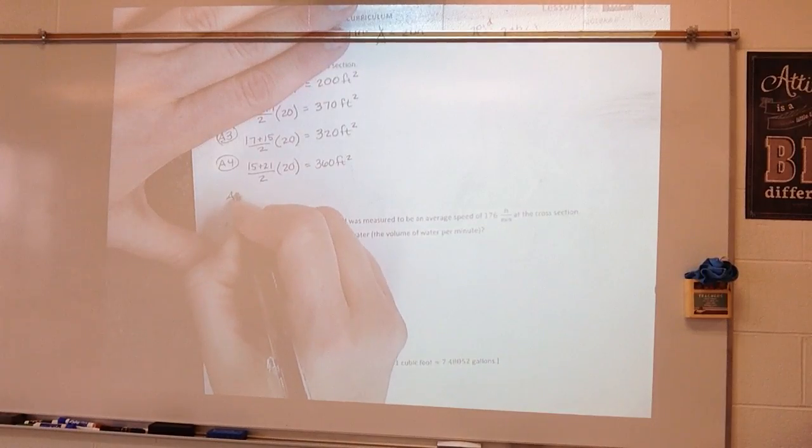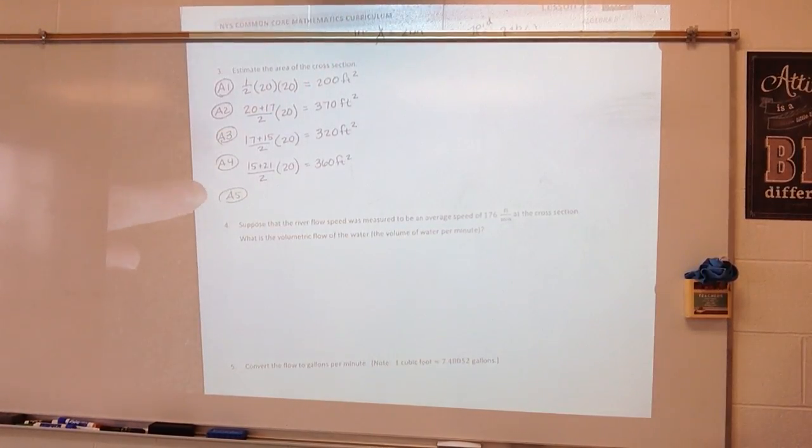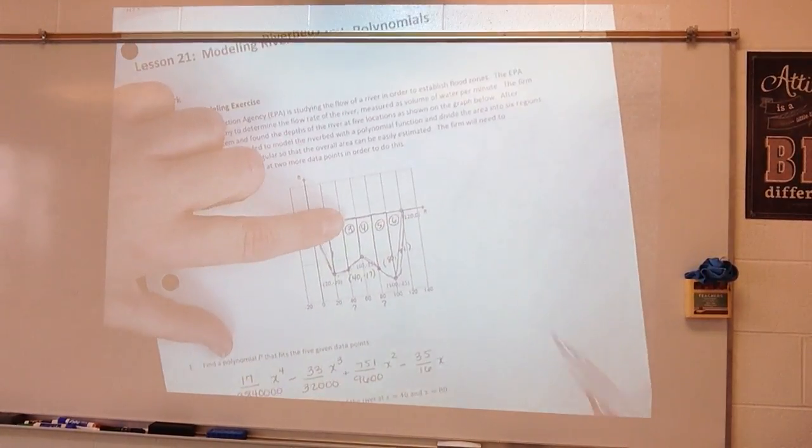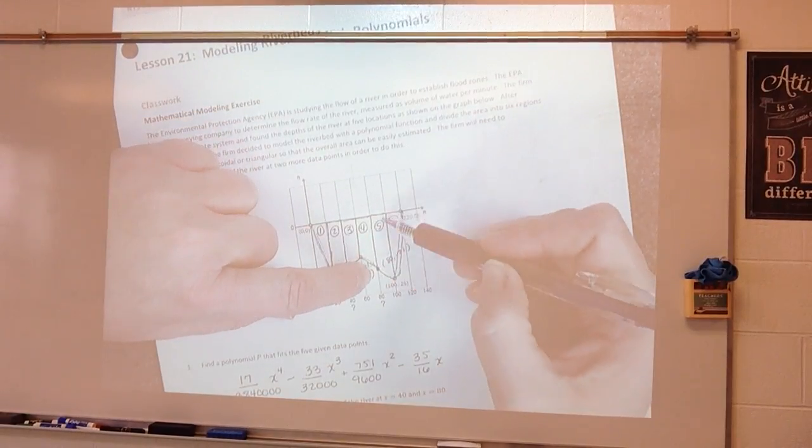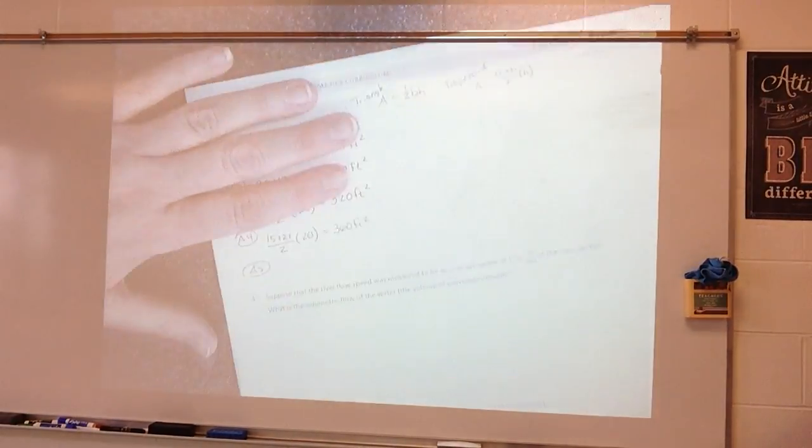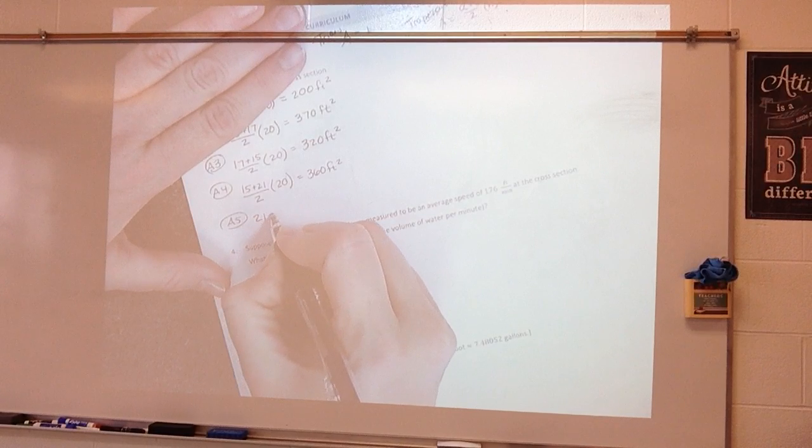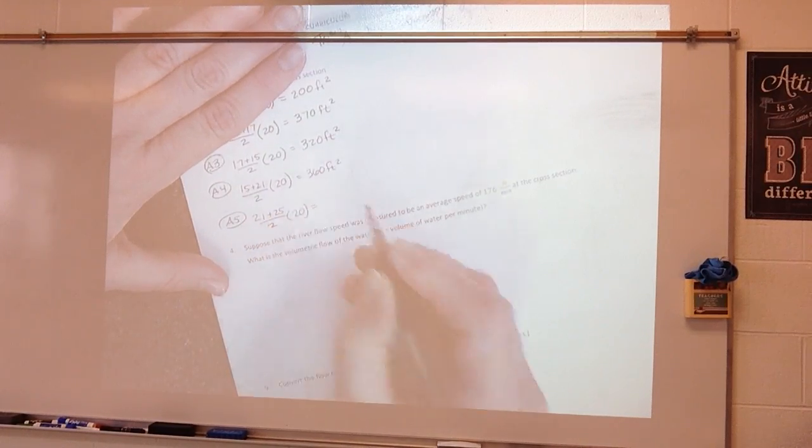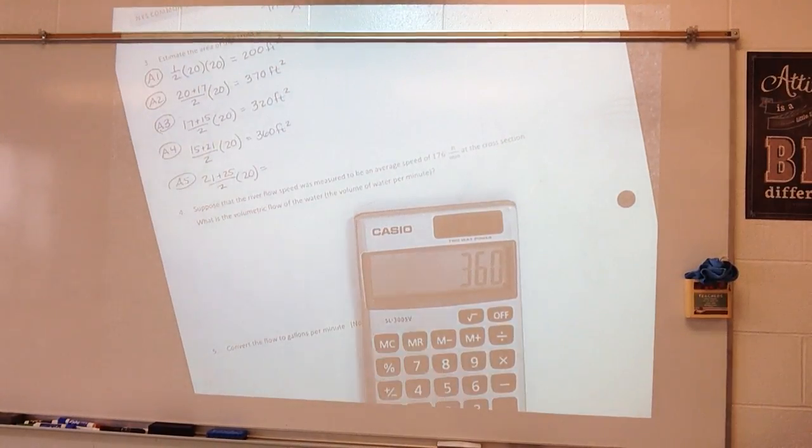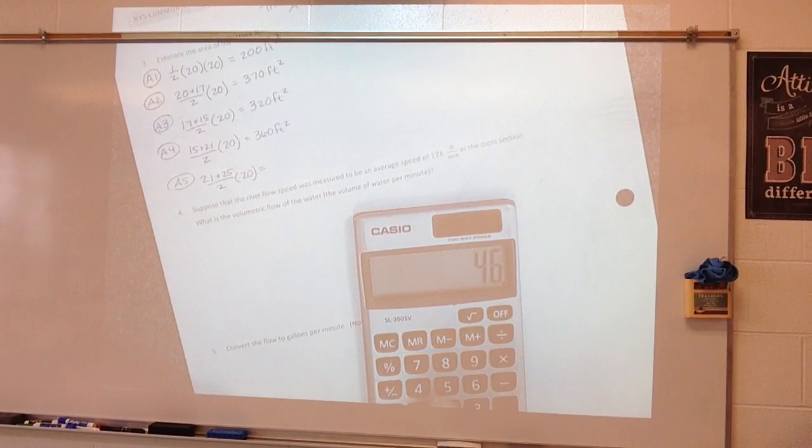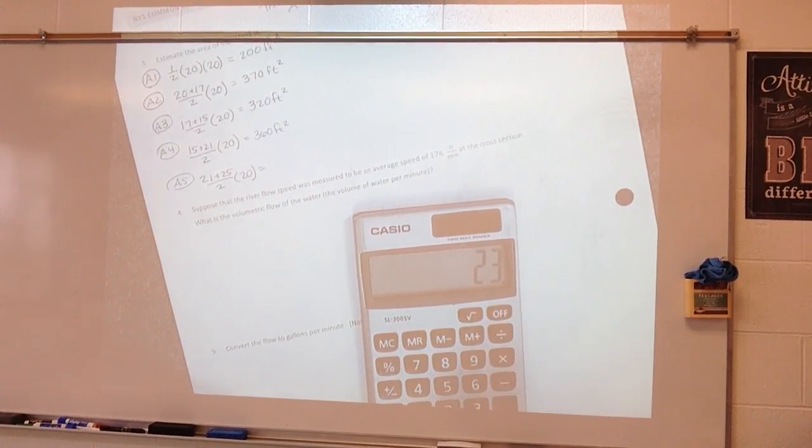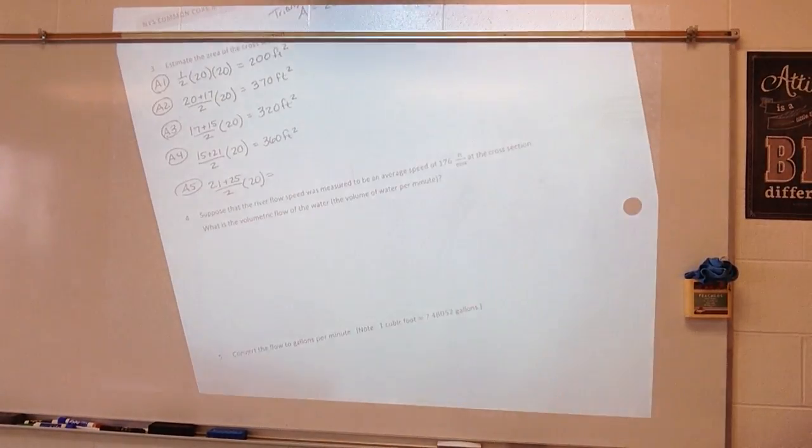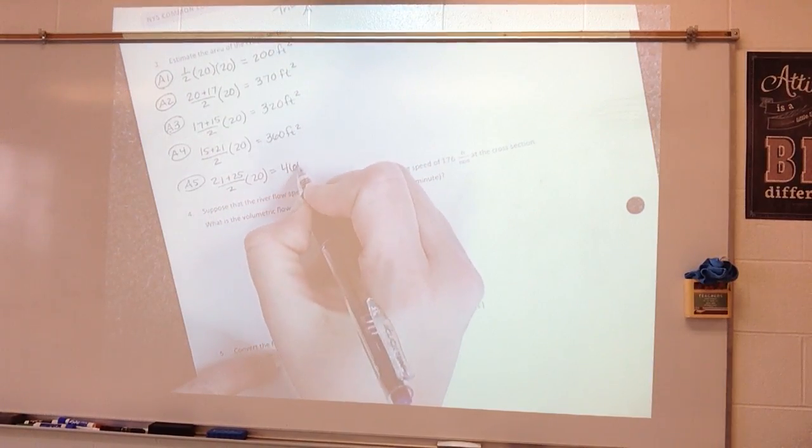The area of my fifth figure. So we've got 21 and 25 divided by 2 times 20. So we'll figure that out. So 21 plus 25 divided by 2 times 20 gives me 460 square feet.